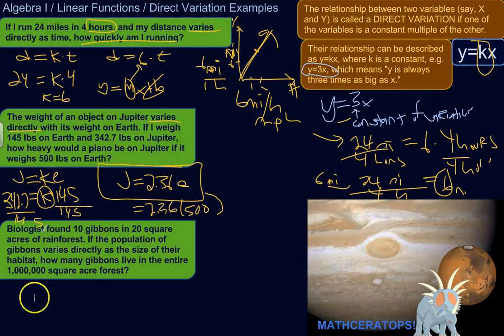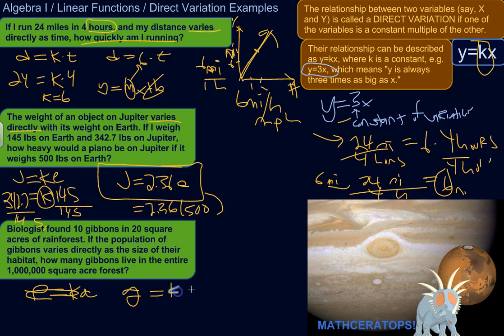Okay, so the population of gibbons, so let's call it P, varies directly as the size of their habitat. So P times K, let's call it A for acres. So the population, I should say gibbons equals K times acres. All right, so they found 10 gibbons in 20 square acres. 10 gibbons in 20 square acres. So 10 is K times 20. So let's find out what that constant of variation is. So we divide both sides by 20 to get K by itself. 10 divided by 20 is 1 half. 1 half, also known as 0.5.